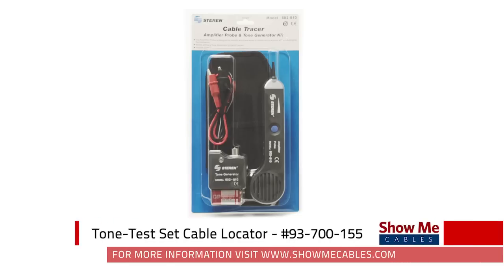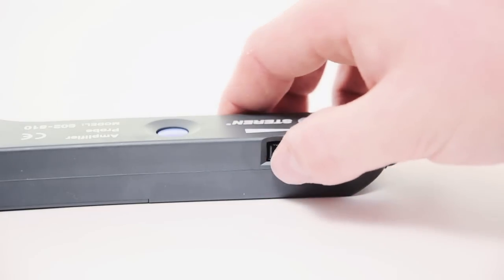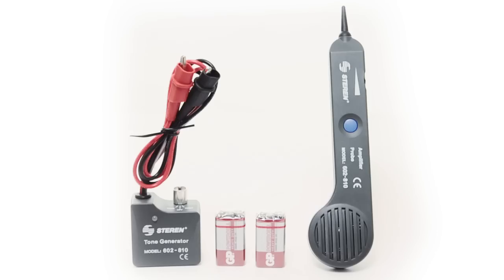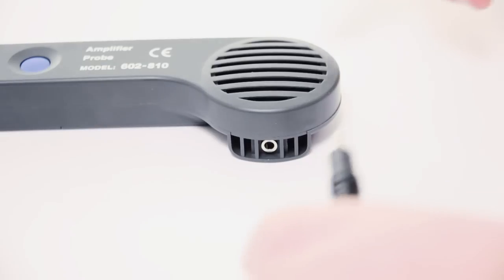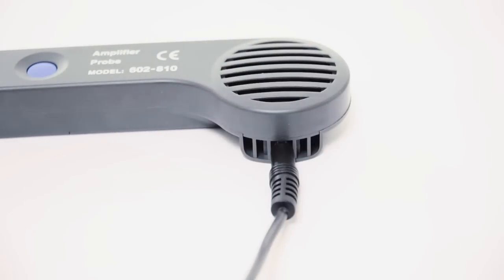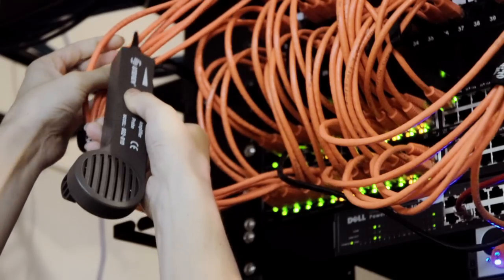This tone test set cable locator is inexpensive and easy to use with a volume switch and a tone selector. The tone test set can be personally adapted for any workplace. There is a headphone jack so the tone is silent for use in areas with other people or audible even in noisy environments.